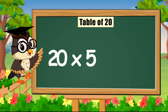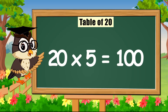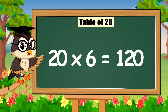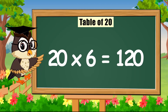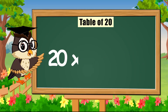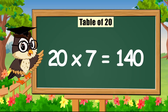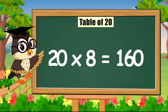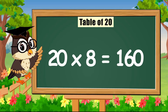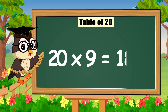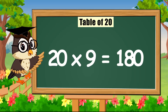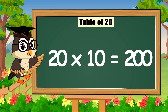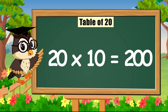Twenty times five is a hundred. Twenty times six is a hundred and twenty. Twenty times seven is a hundred and forty. Twenty times eight is a hundred and sixty. Twenty times nine is a hundred and eighty. Twenty times ten is two hundred.